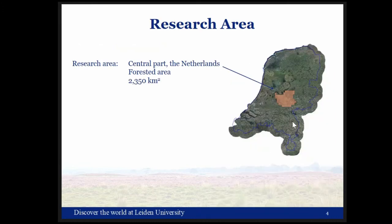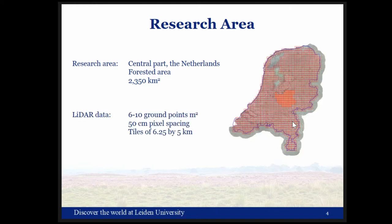The research area, highlighted here, is in the central part of the Netherlands — a forested area covering about five percent of the total area of the Netherlands. For the entire Netherlands we have interpolated LiDAR data available called the AHN (Actueel Hoogtebestand Nederland), with an average of six to ten ground points per square meter and 50 centimeter resolution. It's freely available online.